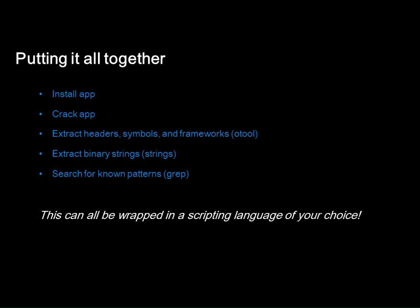Let's put it all together. Here's the process: install the app, crack the app, extract everything O-Tool will tell us, dump all the strings, then parse through using grep to identify patterns that match. You can script all of this — it's all easily automatable. We're hitting six categories in the Mobile Top 10 just by doing this, which is pretty good for a couple minutes of scripting.